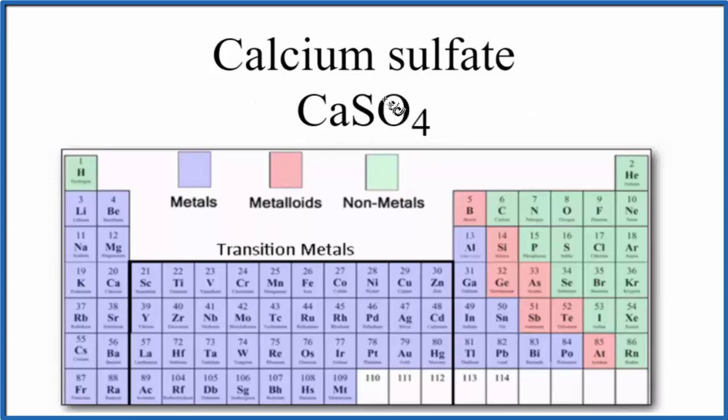When we look at calcium sulfate on the periodic table, calcium right here is a metal. Sulfur is a nonmetal, and oxygen is also a nonmetal. So we have a metal and nonmetals, that's going to be an ionic compound.